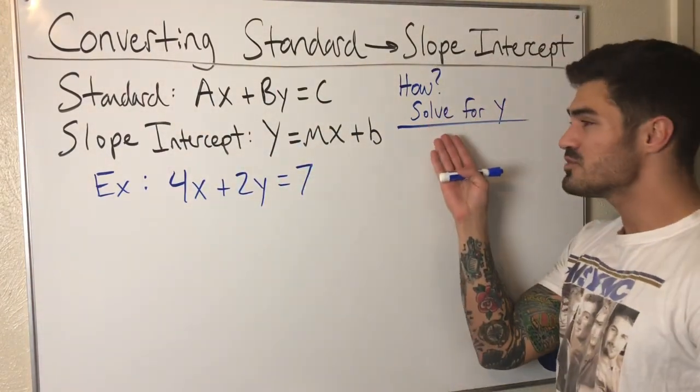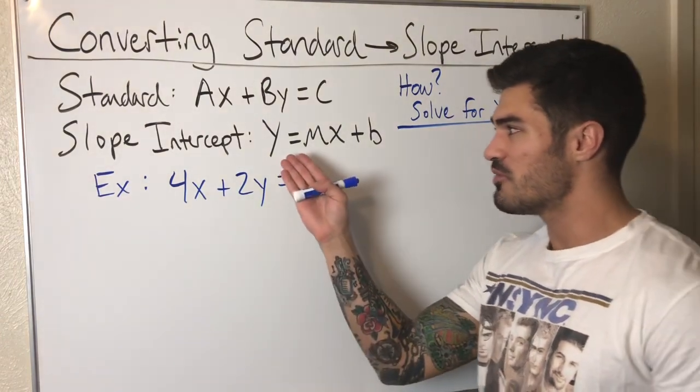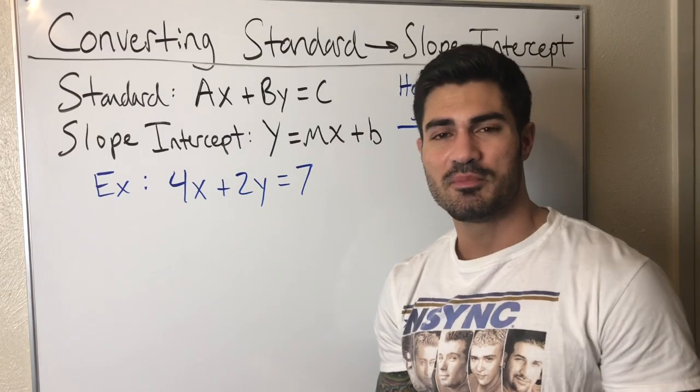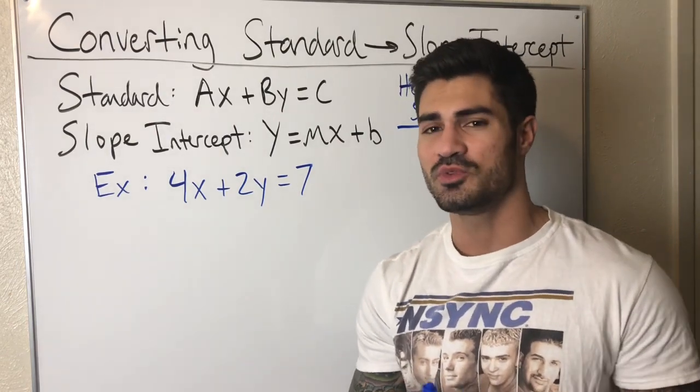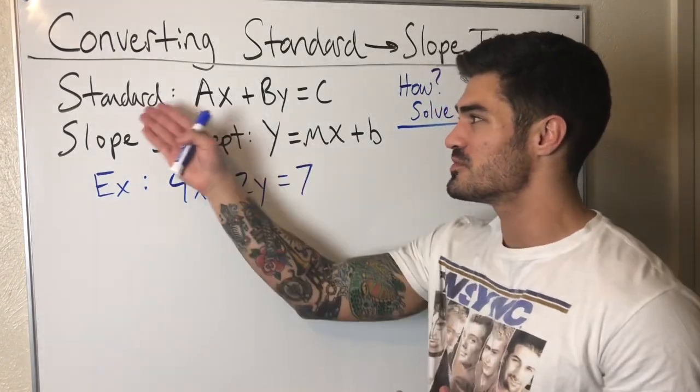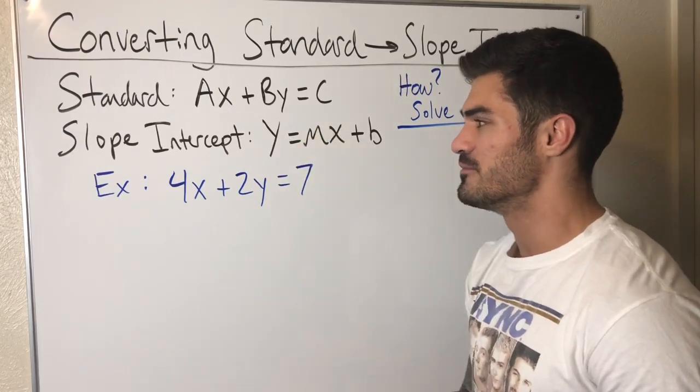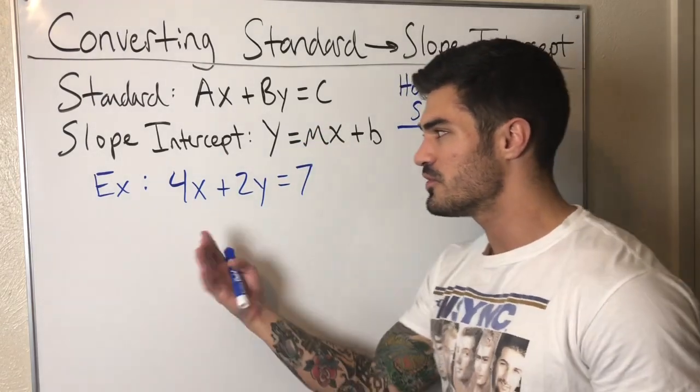So how do we do this? We just solve for Y, because look here, we have Y = MX + b. Y is isolated, it's by itself on one side of the equal sign. So that's exactly how we go from standard to slope intercept—we just solve for this Y. Looking at this example, the first thing we do is we can easily just subtract 4x from both sides.